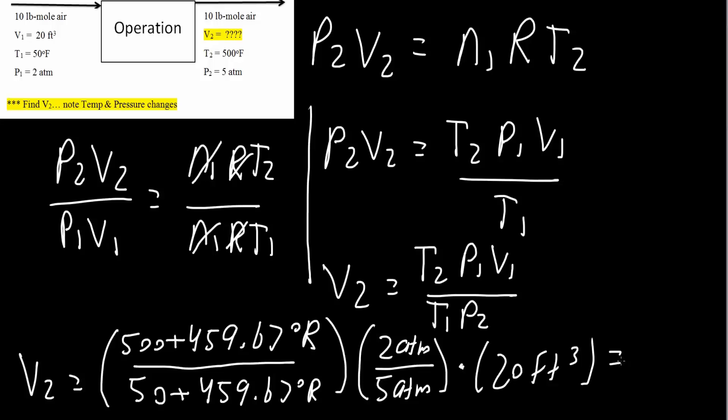So V2 equals 15.06 feet cubed. And that's all we need to do for this problem.